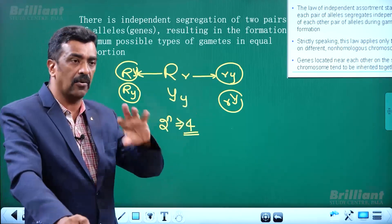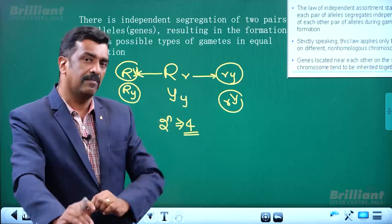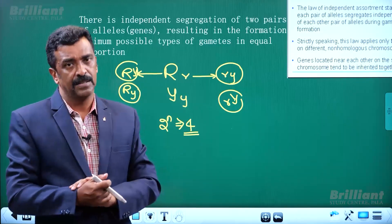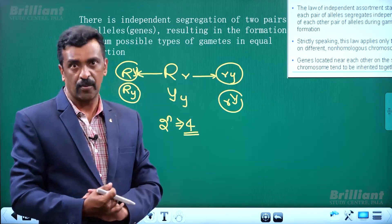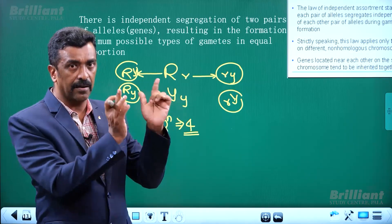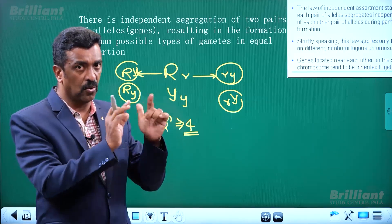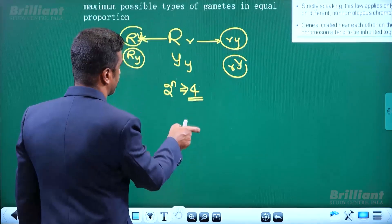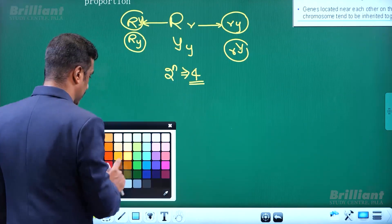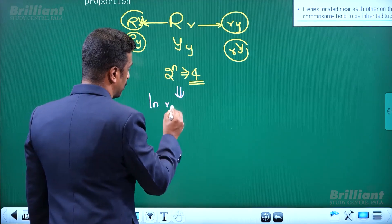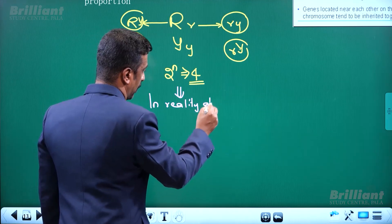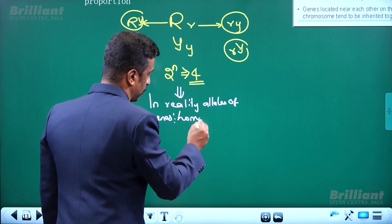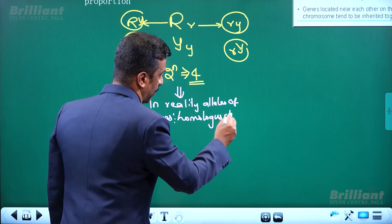Alleles of genes are present on homologous chromosomes. Two pairs are independent, but in reality, pairs of alleles are present on homologous chromosomes. In reality, alleles of genes are present on homologous chromosomes.